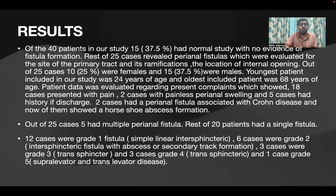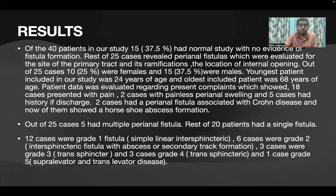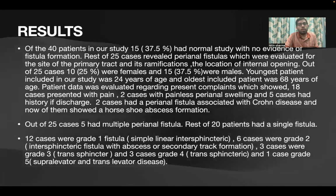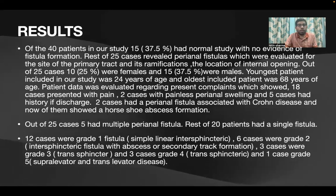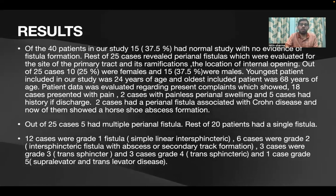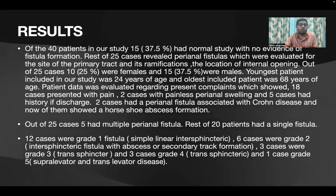Of the 40 patients in the study, 15 had a normal study with no evidence of fistula formation. The remaining 25 cases revealed perianal fistula, which were evaluated for the site of the primary tract, its ramifications, and the location of the internal opening. Of the 25 cases, 10 were female and 15 were male; the youngest patient was 24 years and the oldest was 68. Eighteen cases presented with pain, two with painless perianal swelling, five had a history of discharge, and two had perianal fistula associated with Crohn's disease.